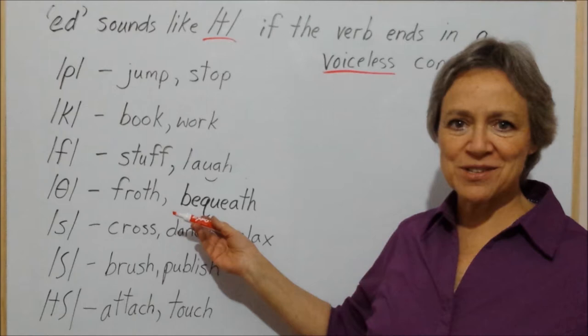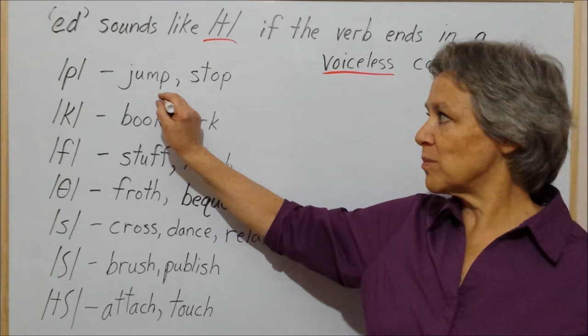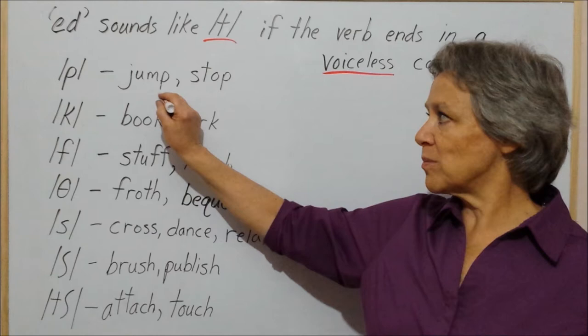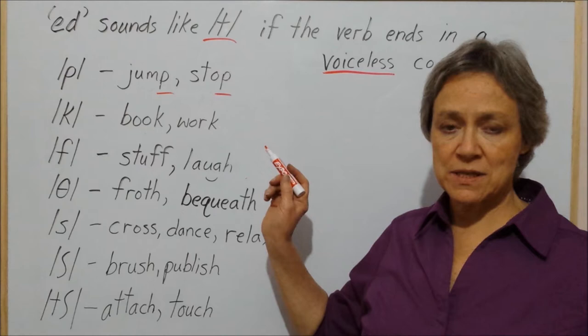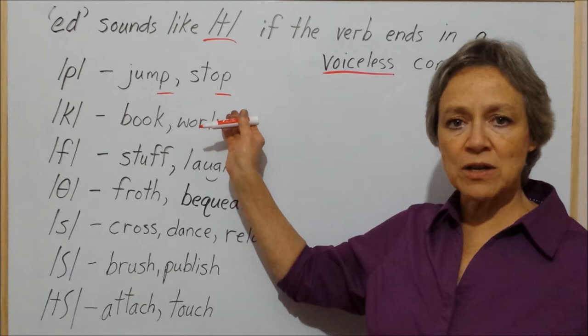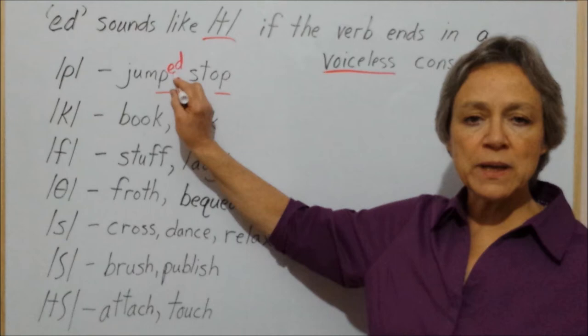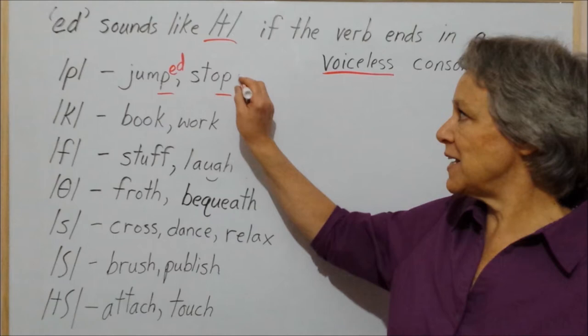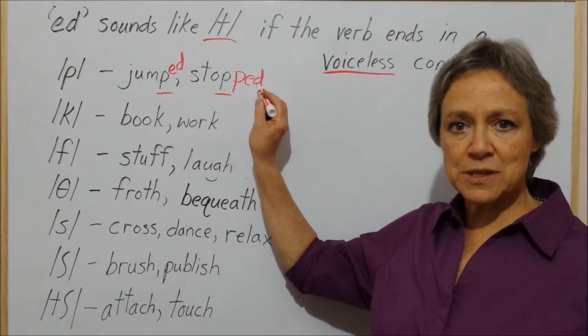Let's go through some examples. With the sound /p/, I have the verb 'jump' — it ends in /p/ — and the verb 'stop' — also /p/. They both end in the /p/ sound. So if I add ed to either one of these, ed will sound like /t/. If I add ed here, this word would be 'jumped'. If I add ed here, this word is 'stopped'.